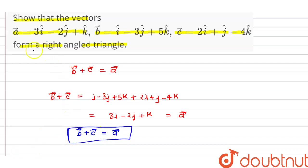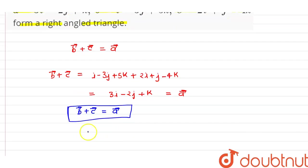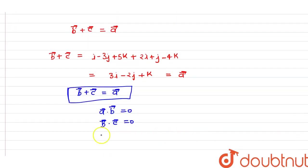We have to prove that the three vectors form a right angle triangle. If the given vectors make a right angle triangle, then the condition is that the dot product of any two vectors should be equal to zero. That is, vector a · vector b = 0, or vector b · vector c = 0, or vector c · vector a = 0. If any of these conditions is satisfied, the triangle is a right angle triangle.